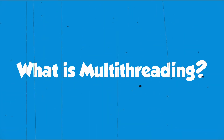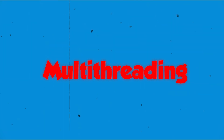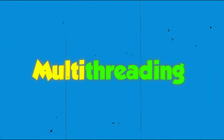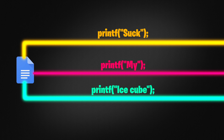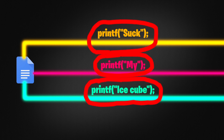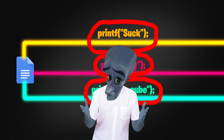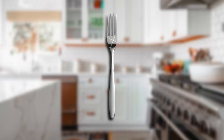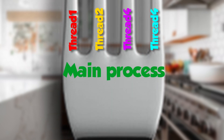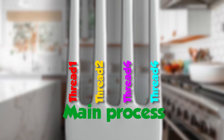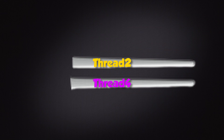So first off, what actually is multi-threading? Multi-threading, as the name suggests, is about how we can have several threads of the program being executed at once. A thread in this case is just a sort of process of the program. Think of it like a fork — we start off with our main process, but then we can split it up between several threads being executed at the same time.